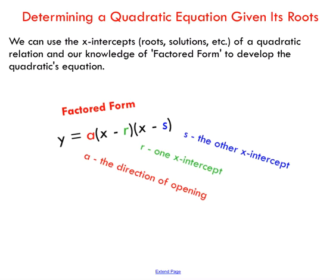In order to do this, we have to work closely with what's called factored form of a quadratic. This is just another form that a quadratic can take. Usually we get factored form by factoring a standard form quadratic. So we're going to work with the x-intercepts or the roots or solutions. We're going to come up with an equation of quadratic.